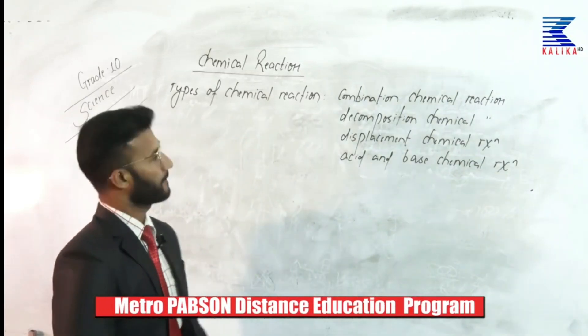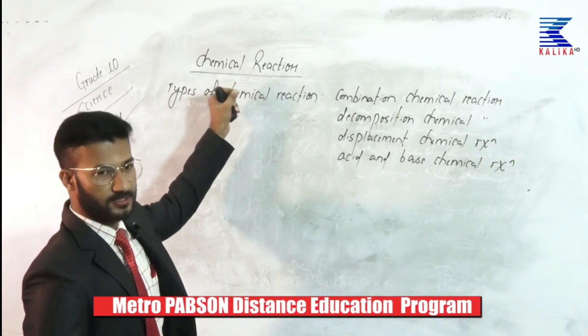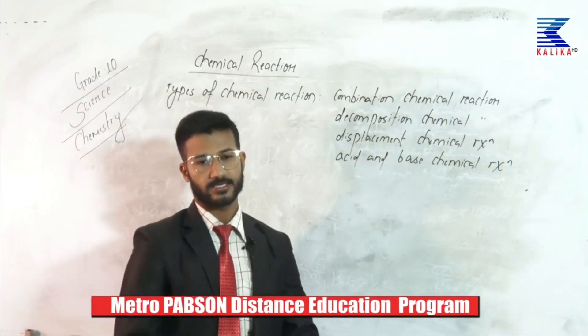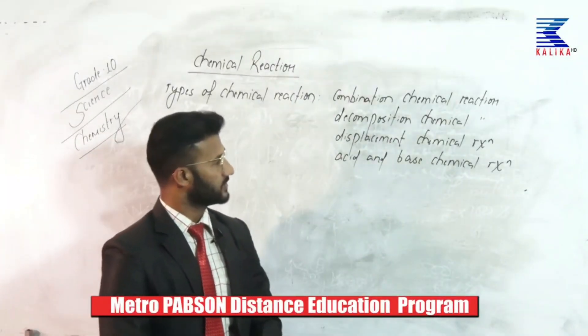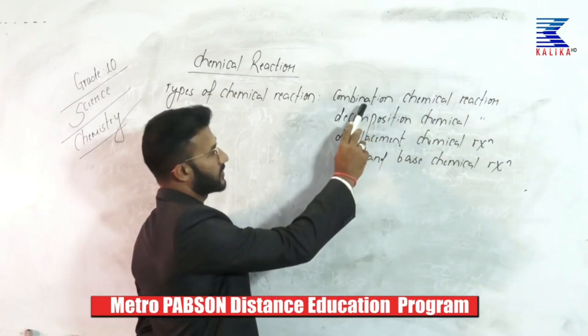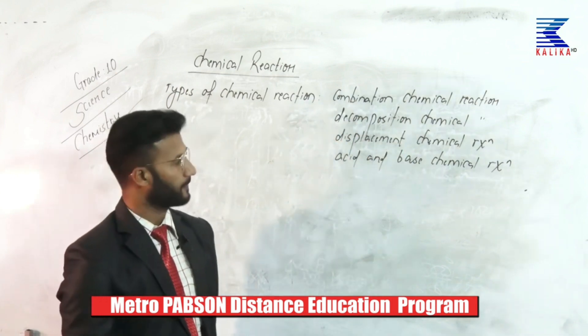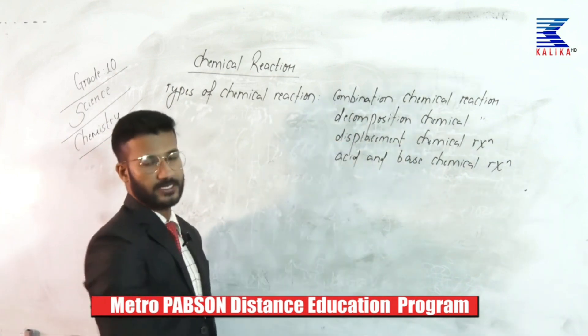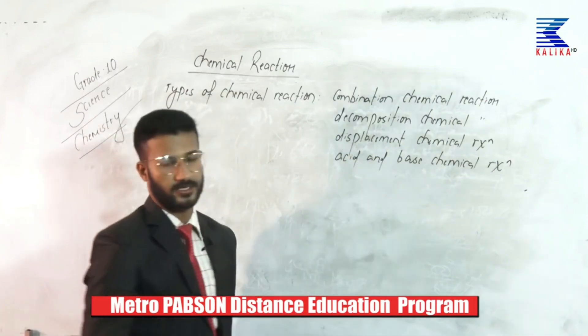Today I am here with you with the topic chemical reaction from class 10 science subject. There are four types of chemical reaction: combination chemical reaction, decomposition chemical reaction, displacement chemical reaction, and acid and base chemical reaction.